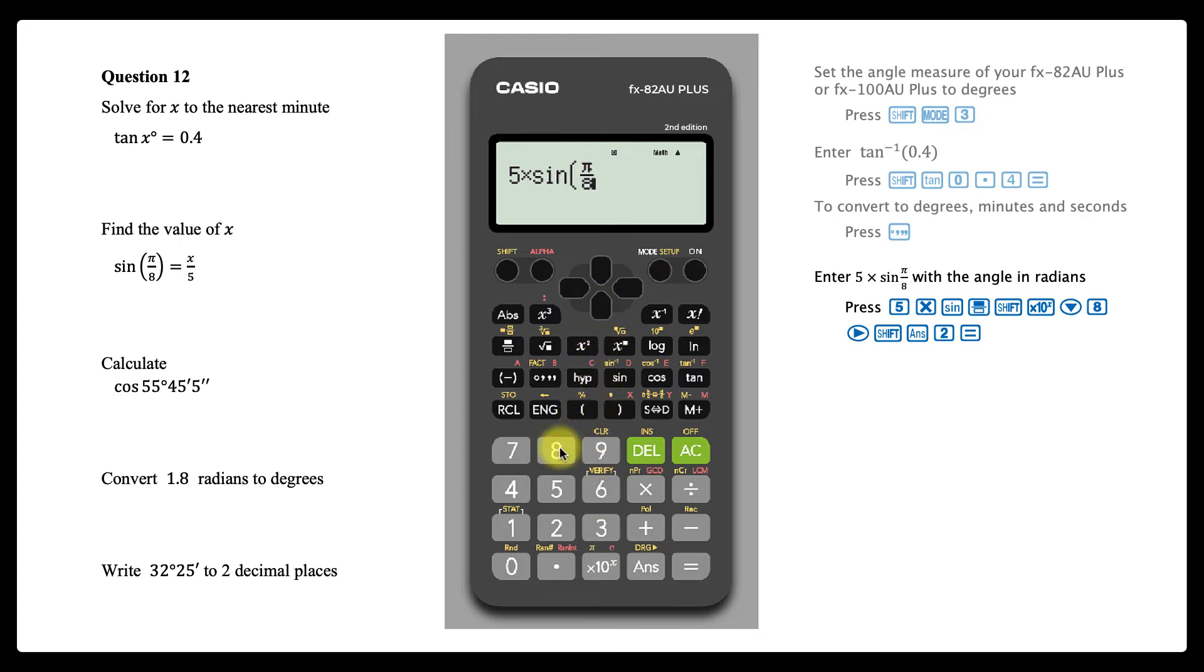To indicate that this angle is in radians, arrow across so that the cursor is adjacent to the entire fraction, not just the denominator. Then enter the radians symbol by pressing shift and the answer key to access the DRG local settings and press 2 to choose radians. Now press equals and the calculation is complete.